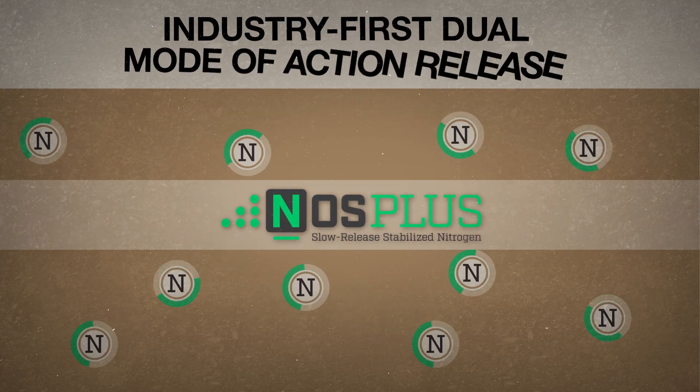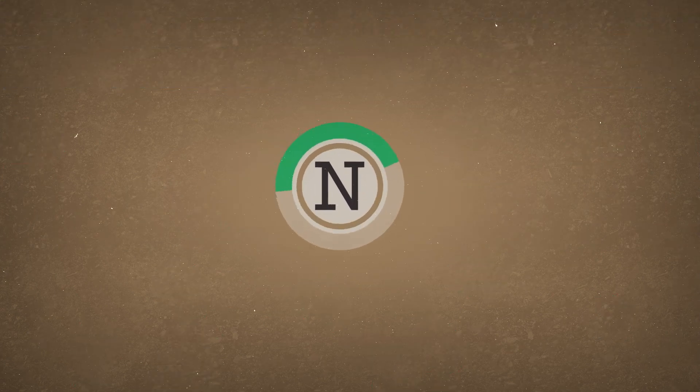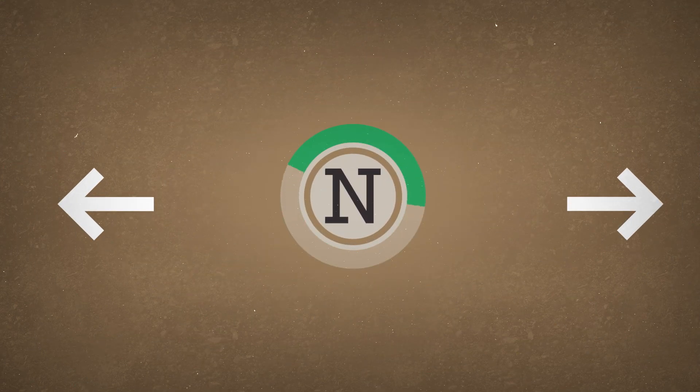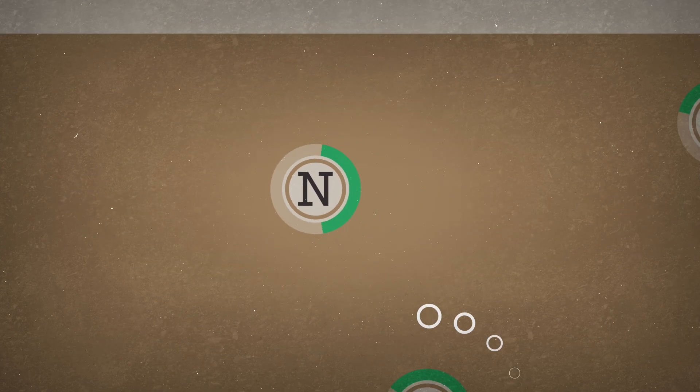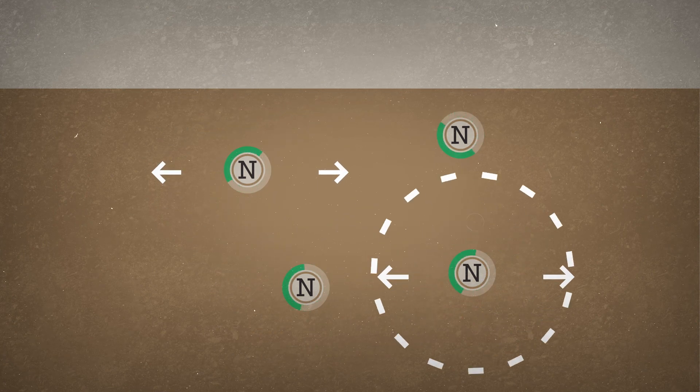NOS Plus takes performance a step higher with the addition of an industry-first, dual mode of action release. An advanced polymer coating releases stabilized nitrogen predictably over time, while a fully infused, NOS-stabilized urea reduces nitrogen loss as it's released.